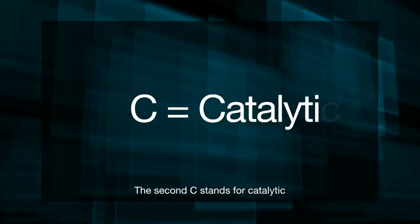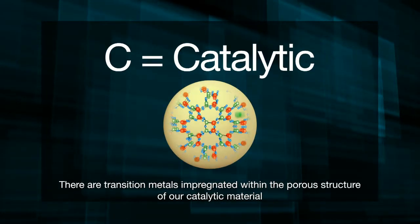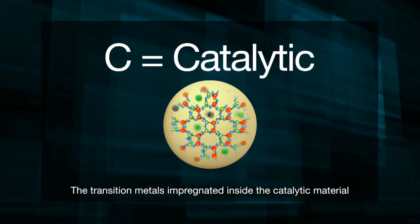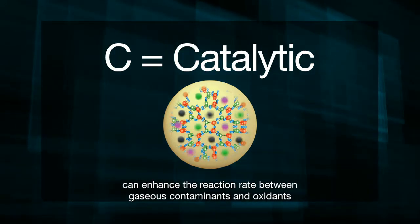The second C stands for catalytic. There are transition metals impregnated within the porous structure of the catalytic material. The transition metals impregnated inside the catalytic material can enhance the reaction rate between gaseous contaminants and oxidants.